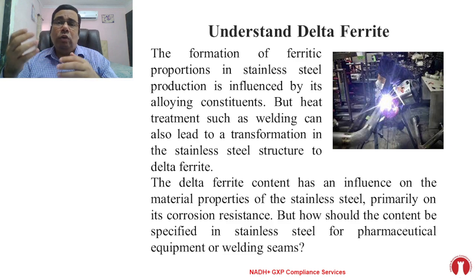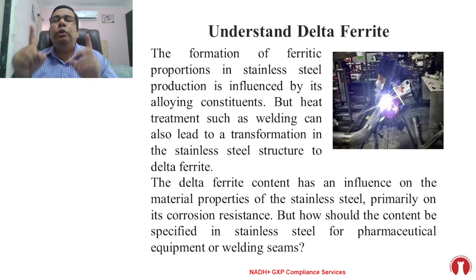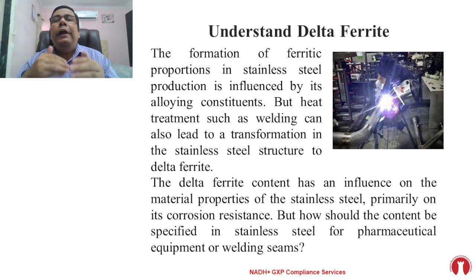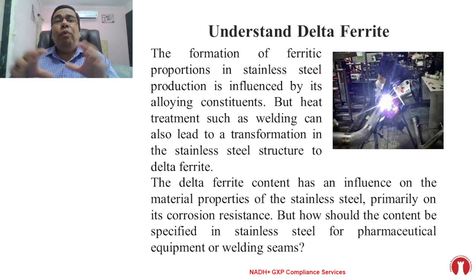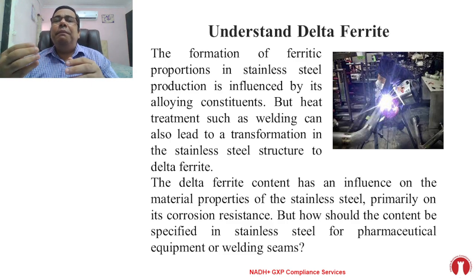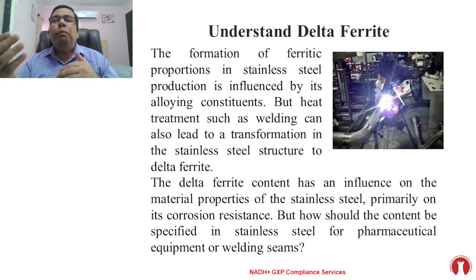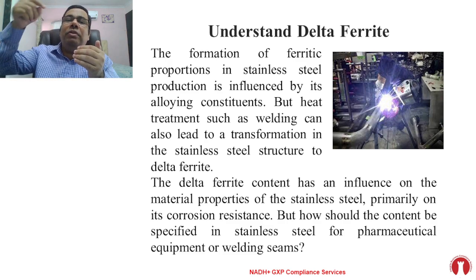How is delta ferrite formed and how does its concentration increase? The formation of ferritic proportions in stainless steel is influenced by its alloying constituents. When stainless steel is prepared, these ferrite components are generated — only the concentration may vary. Heat treatment such as welding can also lead to transformation in the stainless steel structure to delta ferrite. When welding a pipe during GMP operations, heat is generated, which causes the delta ferrite content to increase. This has an influence on the material properties of stainless steel, primarily on its corrosion resistance.